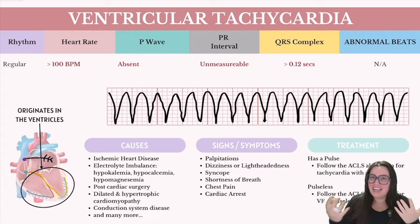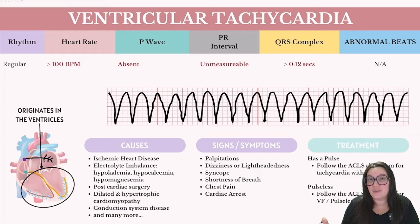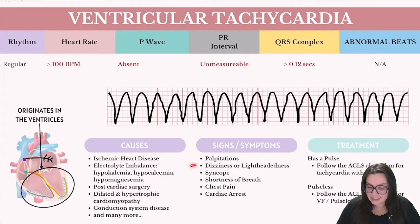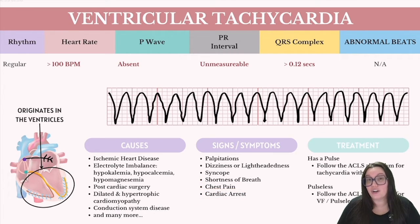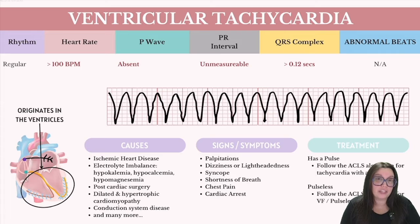Signs and symptoms are similar to other cardiac irregularities: palpitations, dizziness, lightheadedness, and syncope. Fainting can obviously occur whenever there's an irregularity within the heart system. Shortness of breath and chest pain are also common. The most important one to remember is cardiac arrest, because as we discussed, ventricular tachycardia can lead into ventricular fibrillation, which is cardiac arrest.